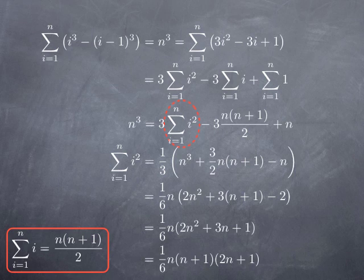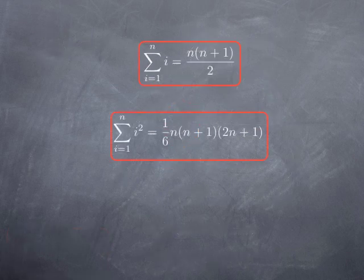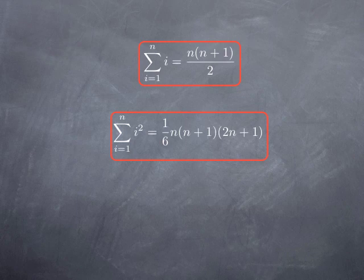You see that this is 0 when n is negative 1. In other words, I can factor out n plus 1, and the second factor is 2n plus 1. So that gives me that the sum of the n first consecutive positive integers is n times n plus 1 over 2, and the sum of the squares of the first n positive integers is 1 sixth of n times n plus 1 times 2n plus 1.